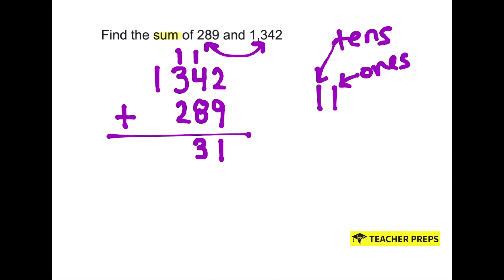We can then add 2, 3, and 1. 2 plus 3 is 5 plus 1 is 6. And then we have nothing to add with the 1, so we can just bring it down. Now if you notice, I did not put my comma in the work, but you do need the comma in the answer. So we have 1,631 as the sum.